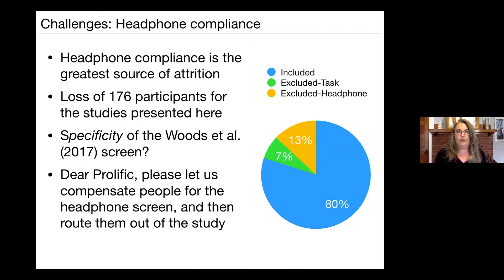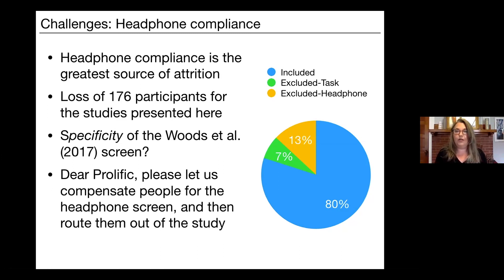Our biggest challenge is headphone compliance — without a doubt our greatest source of attrition. For the approximately 1,100 participants across these six successes, the proportion excluded due to the headphone task carries the largest weight compared to task performance exclusions. I'm convinced there is high sensitivity for headphone use in the Woods et al. screener, but I'd like to know more about specificity.